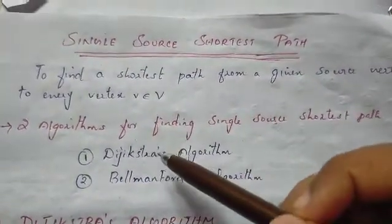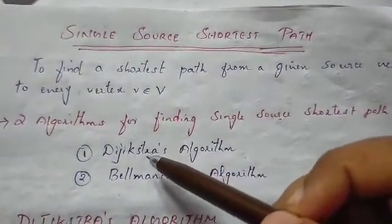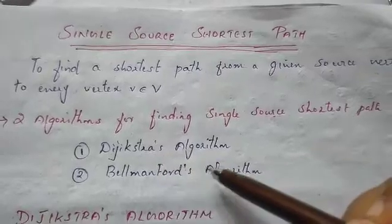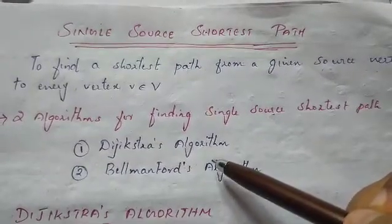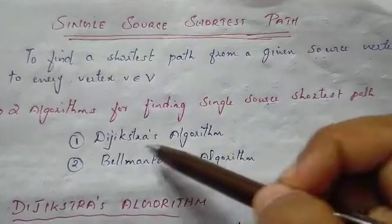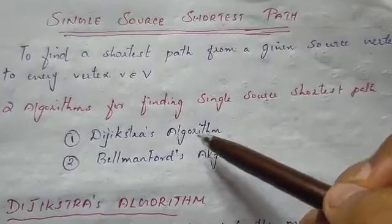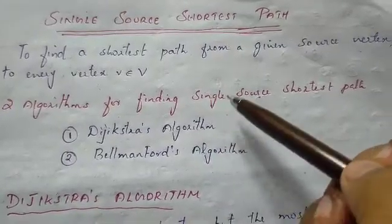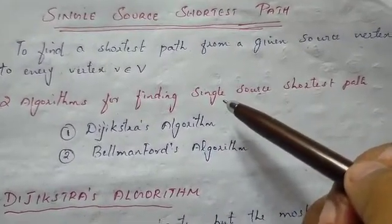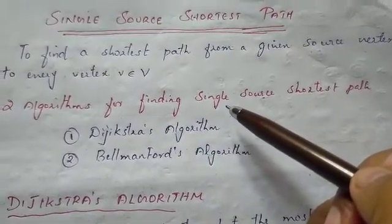If you want to use this algorithm, it is called Dijkstra's algorithm or Bellman-Ford algorithm. I am going to explain Dijkstra's algorithm applied to an undirected graph. In the undirected graph, we use Dijkstra's algorithm.